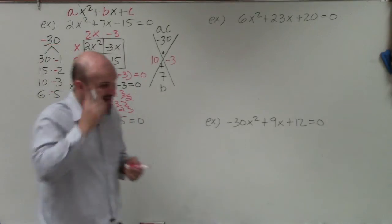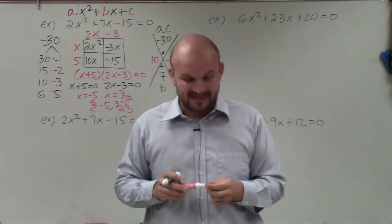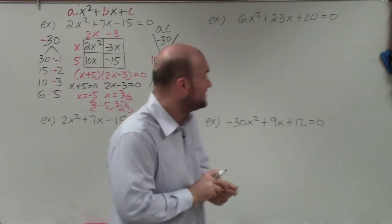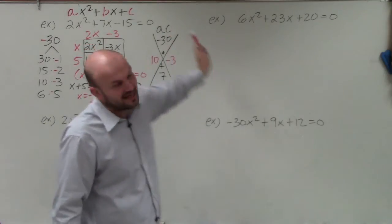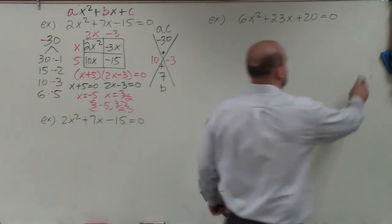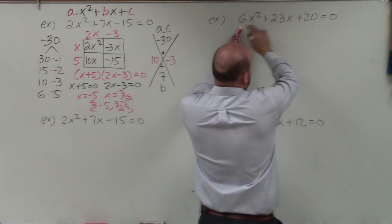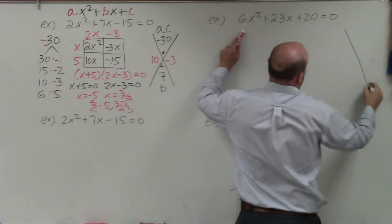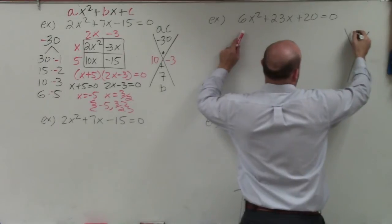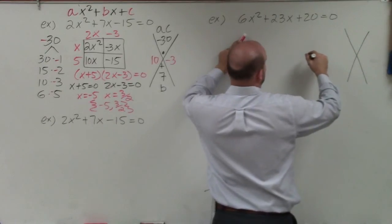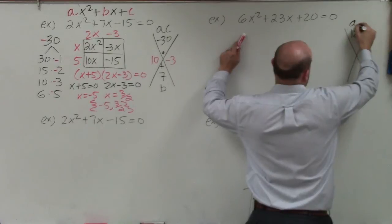Now, if you don't like the box method, I have another way. For the next problem, everything is set up similarly. We need to identify our a and c, which is 6 times 20. So a times c gives us 120. Then we need to figure out the values that are going to add to give us a positive 23.